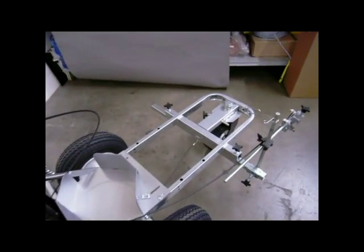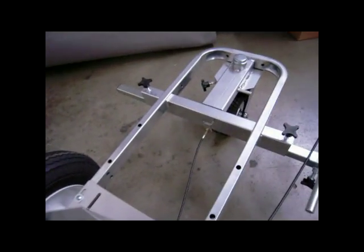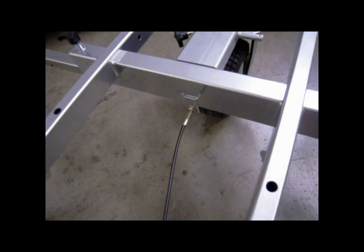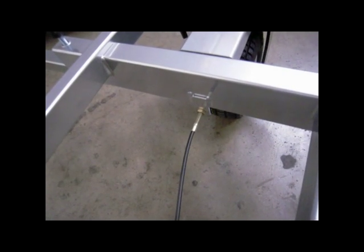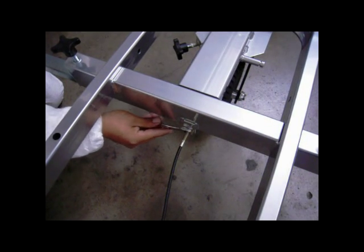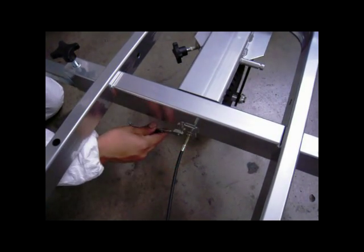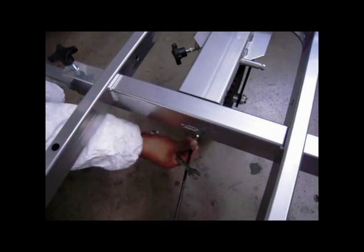To begin, locate the caster cable on the underside of the striper behind the pivoting front wheel. Using a half inch wrench, loosen the tensioning nut and remove the caster cable from its mounted location so that it hangs slack.